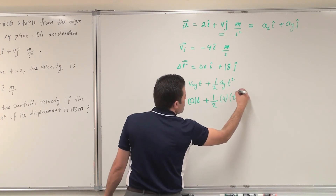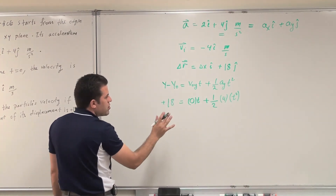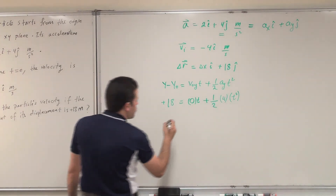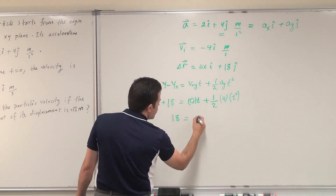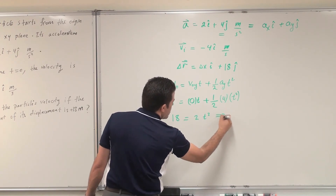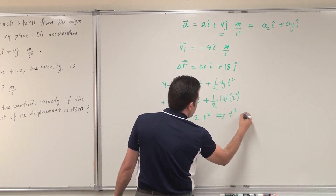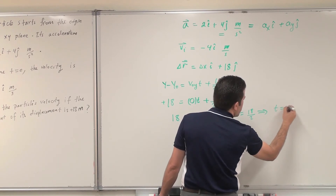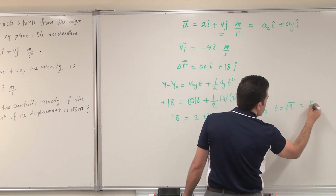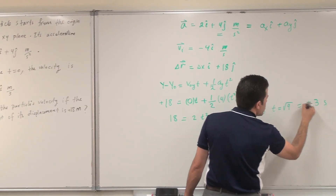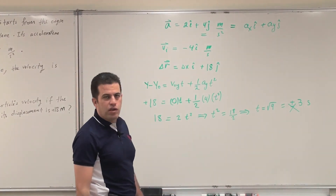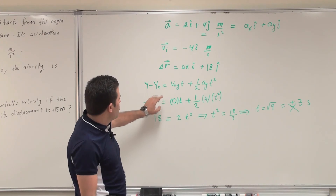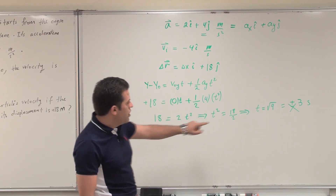From 18 equals 2t-squared, t-squared equals 18 divided by 2, giving t equals the square root of 9, which is plus or minus 3 seconds. I exclude the negative time as it's not physically possible. So the time taken to reach a y-displacement of 18 meters is 3 seconds.